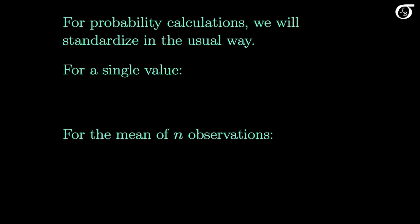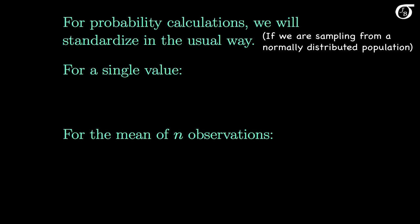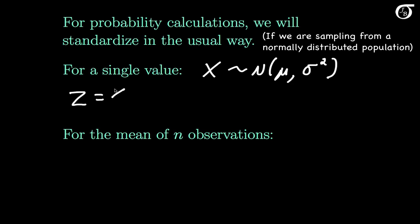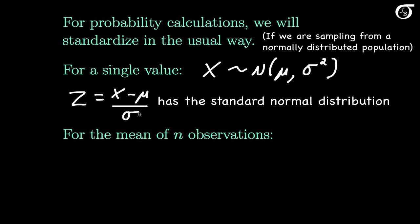In probability calculations we will standardize in the usual way. If we are sampling a single value from a normally distributed population, then that single value X has a normal distribution with a mean of mu and a variance of sigma squared. To standardize, we subtract the mean and divide by the standard deviation. So if we let the random variable Z equal X minus its mean of mu, divided by its standard deviation of sigma, then Z has the standard normal distribution.